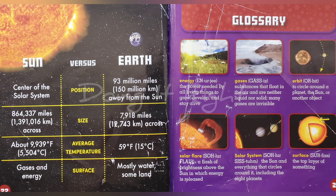Orbit: to circle around a planet, the Sun, or another object. Solar flare: a flash of brightness above the Sun in which energy is released.